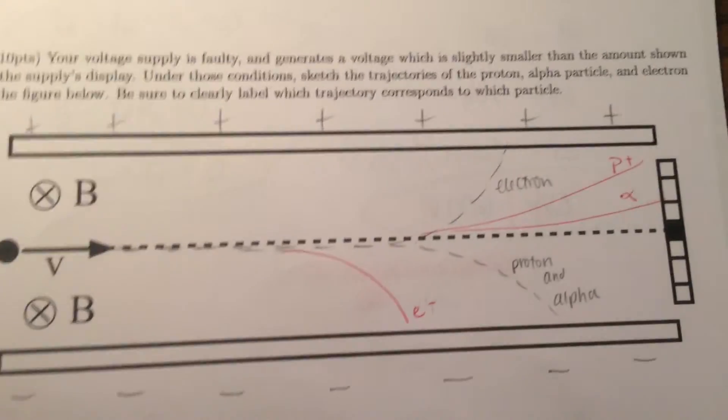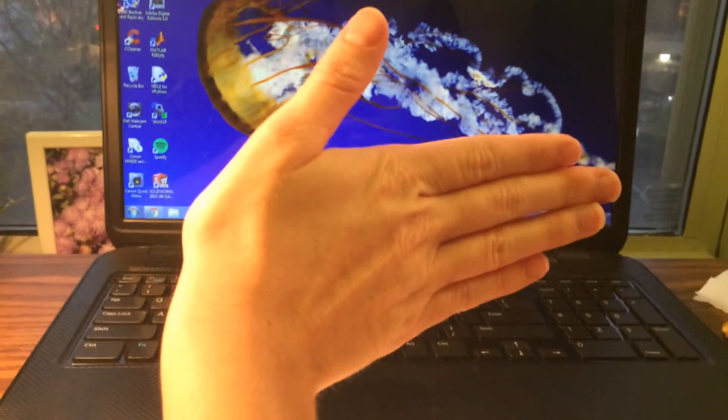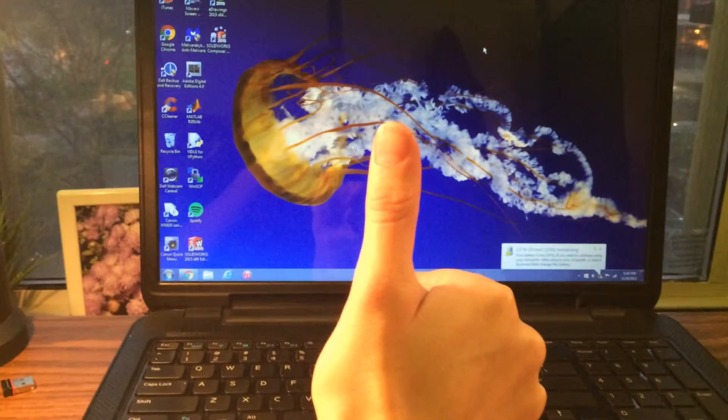So, for the proton and the alpha particle, they should be moving upwards, based on the right-hand rule again. So velocity is pointing to the right, magnetic field is still into the page, and the force is, magnetic force is still upward.